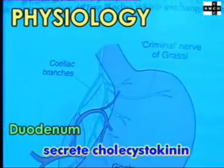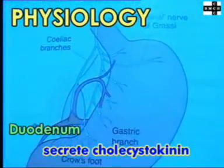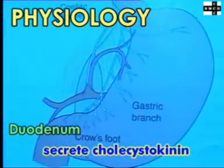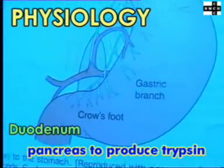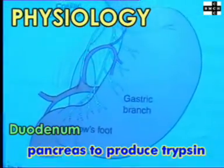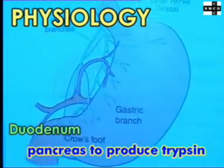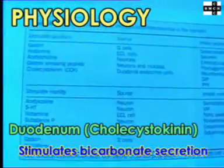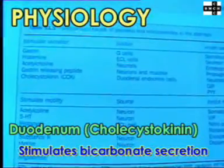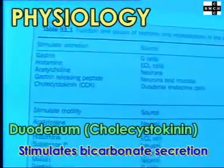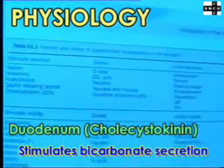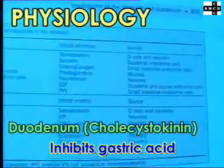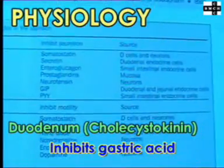Endocrine cells in the duodenum secrete cholecystokinin, which stimulates the pancreas to produce trypsin and the gallbladder to contract. This hormone also stimulates bicarbonate secretion by the pancreas and inhibits gastric acid secretion.